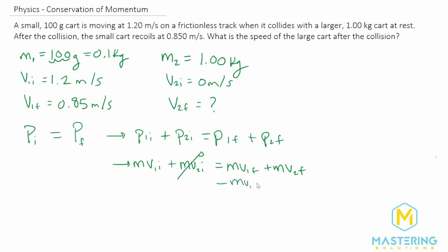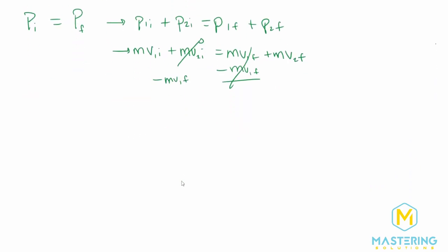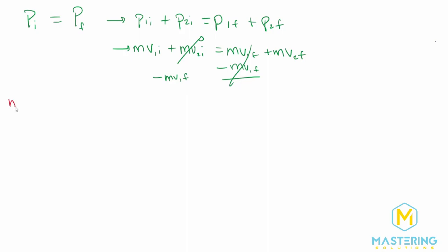So let's move this unit over to the other side. So m1V1 final subtracted from both sides. m2V2 final is equal to m1V1 initial minus m1V1 final.